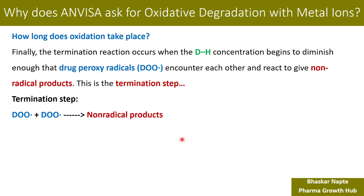Then these drug peroxy radicals start interacting with each other — DOO• reacts with another DOO• to form a non-radical product — and if there is no radical present, there is termination of the oxidation reaction. This is the way oxidative degradation products are formed when metal ions are present along with organic hydroperoxide impurities. This becomes the very basis for including oxidative degradation by metal ions. Drug substances may not contain metal ions in pure form, but you cannot ignore the possibility of metal ions from the container closure system or excipients in drug products. That is why ANVISA has insisted on conducting oxidative degradation with metal ions like iron 3.